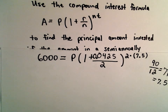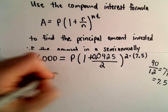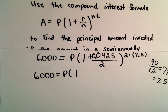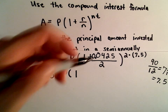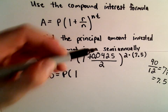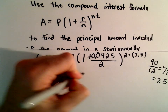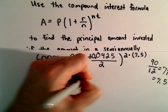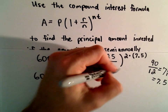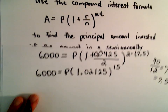So now I'm going to simplify the right side down a little bit. We've got 6,000 equals the principal. If we do 0.0425 divided by 2 and add that to 1, we'll get 1.02125. And 2 times 7.5 is going to be 15.